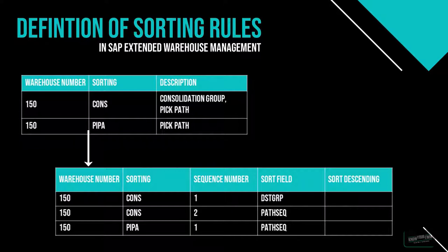As already mentioned, we can set up a sorting that contains up to 15 separate sorting fields. On top of that, we also have the option to sort either ascending or descending for each sorting field. The standard approach of the EWM system is to do an ascending sorting. But by setting the flag for descending sorting, we could for example customize to start with the highest weight first before going to the lightweight products within the warehouse tasks. This is the general approach of how the sorting profile is set up.